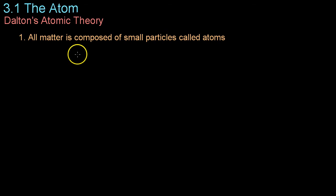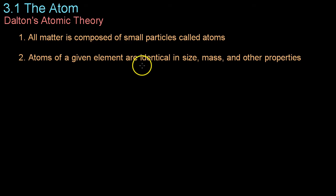The first of which was that all matter is composed of these small particles called atoms, which was something even Democritus had said in ancient Greece. The second was that atoms of a given element are identical in size, mass, and other properties. Any atom of oxygen is equal to any other atom of oxygen, which is equal to all the other atoms of oxygen within the universe. The third assertion was that atoms cannot be subdivided, created, or destroyed. We now know that this is not entirely correct. However, what he was getting at was the law of conservation of mass. That is, that atoms cannot just simply disappear or reappear in nature.